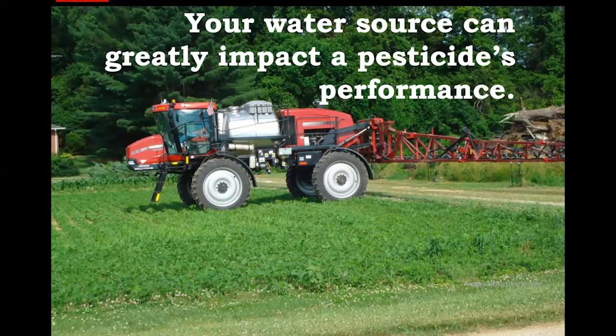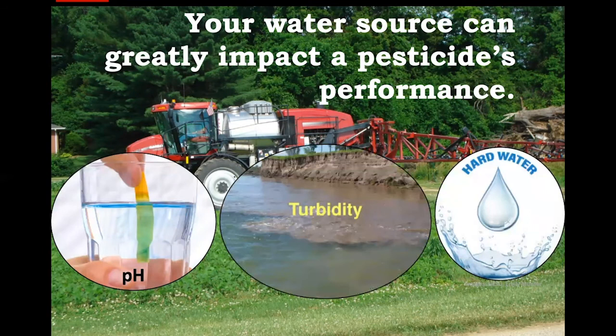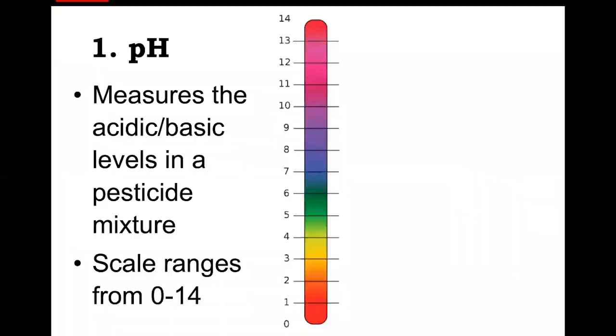Often we don't think about the quality of the water source we use to make our pesticide mixtures. Water is the most common diluting agent. There are three main ways that a water source can interfere with a pesticide's ability to control pests: water pH, water hardness, and turbidity, which is the amount of particles dissolved in your water. In this session you'll learn how these main factors can influence the activity of a pesticide and ways we can improve water quality to optimize your control with pesticides.